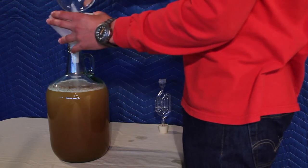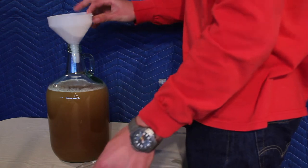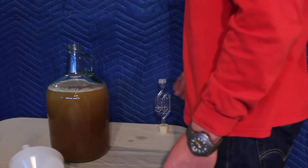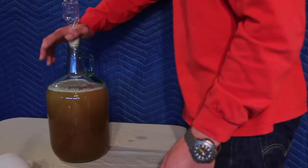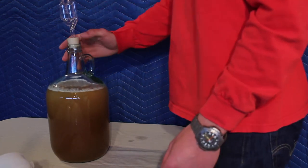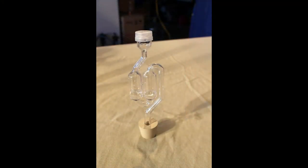Pour in your yeast nutrient, then apply the airlock. After the airlock is secured in place, give it a little swirl to help stir the honey mixture.